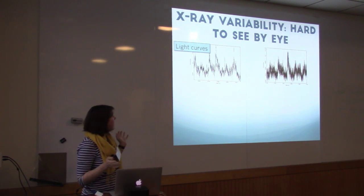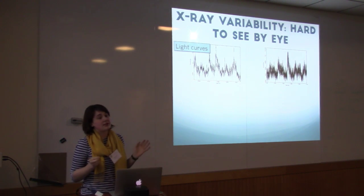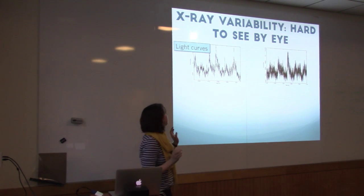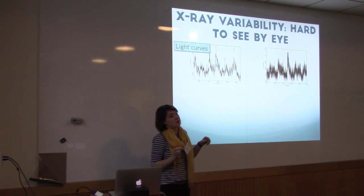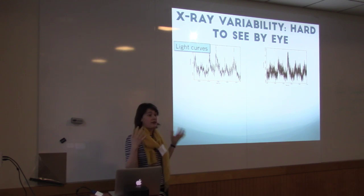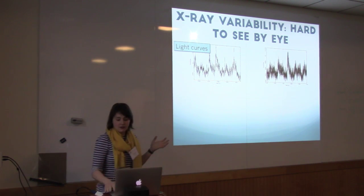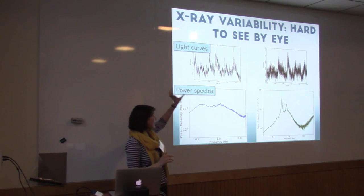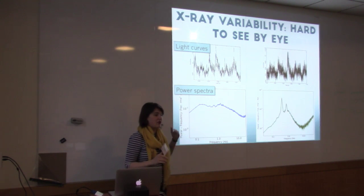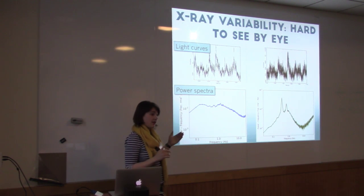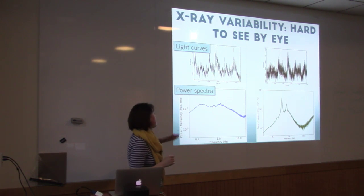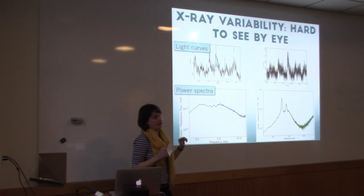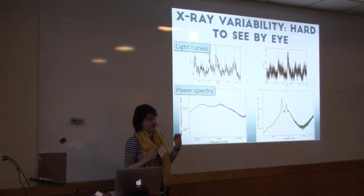We do this because X-ray variability is very difficult to see by eye. Here's an example I like to show: we have two different light curves from two different sources, and by eye they look very similar. However, if you make the power spectrum — take segments and average them together — you can see that the power spectra are very different, and there are different overall trends in the source data. This is why we like to use Fourier techniques.